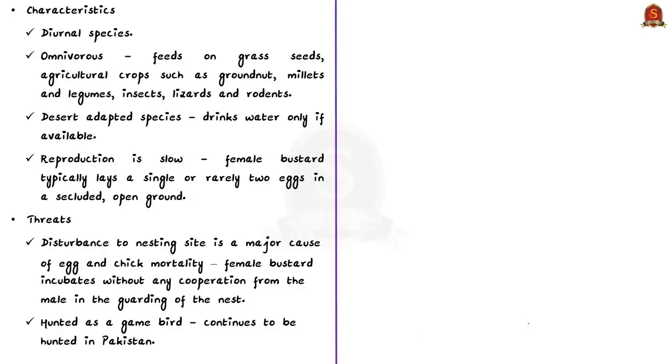Its current distribution is restricted to fragmented pockets in 6 states of India. The largest global population is found in Rajasthan, with between 120 to 125 birds in the desert national park which spreads through the districts of Jaisalmer, Barmer and Bikaner. Some 25 to 50 birds are found in Ajmer, Pali and Thong districts of Rajasthan. All other populations have less than 35 birds each, located within the states of Maharashtra, Andhra Pradesh, Gujarat, Karnataka and Madhya Pradesh. It is a diurnal species, typically active in the daytime. It is omnivorous, feeding on grass seeds, agricultural crops such as groundnut, millets and legumes, and also on insects, lizards and rodents. It is a desert adapted species, which drinks water only if it is available. Reproduction is slow in this species because the female bustard typically lays a single egg or rarely two eggs in a secluded open ground. She incubates without any cooperation from the male bustard in guarding the nest. Disturbance to nesting sites is a major cause of egg and chick mortality.